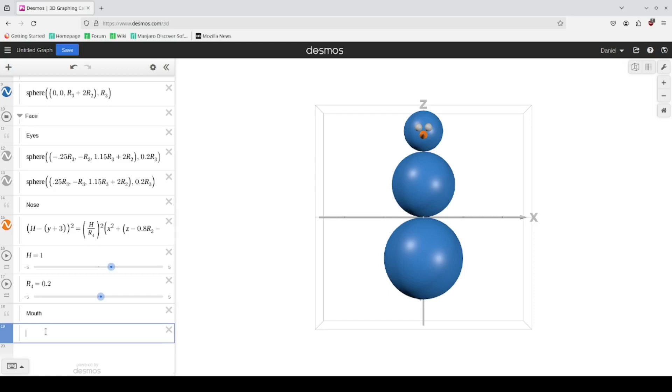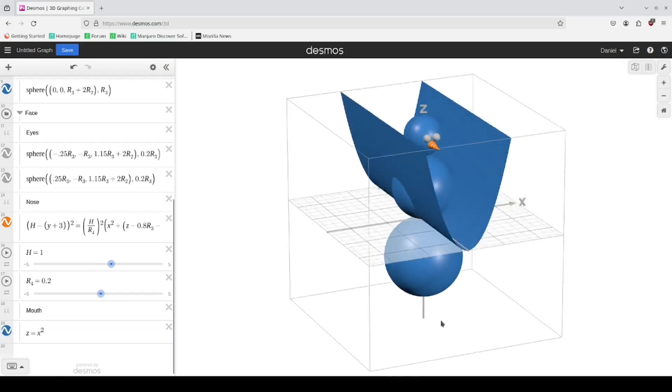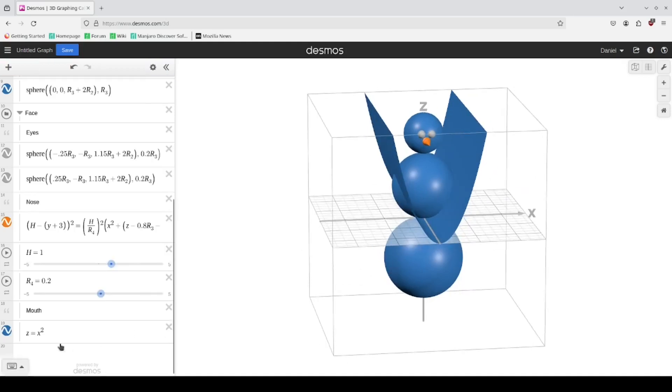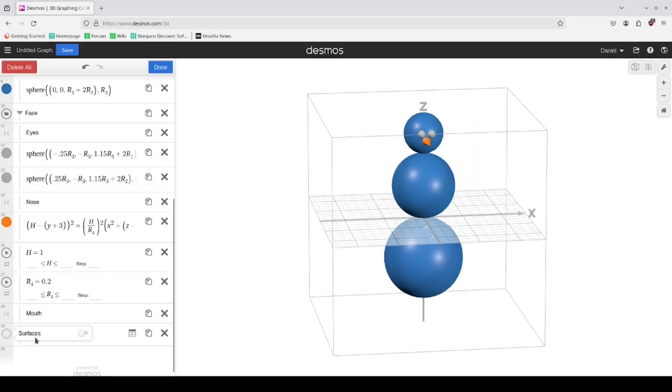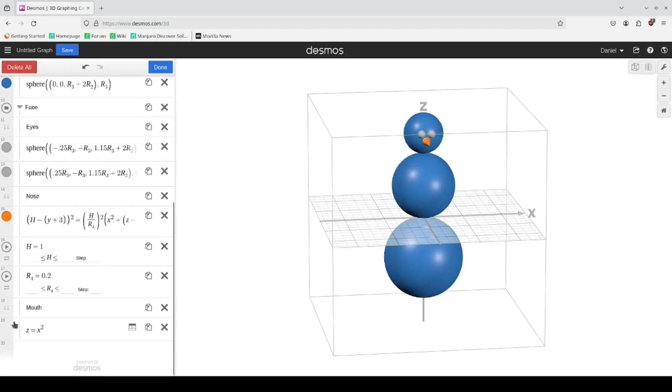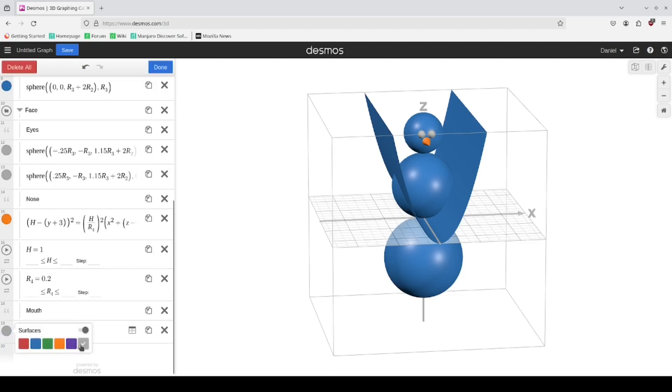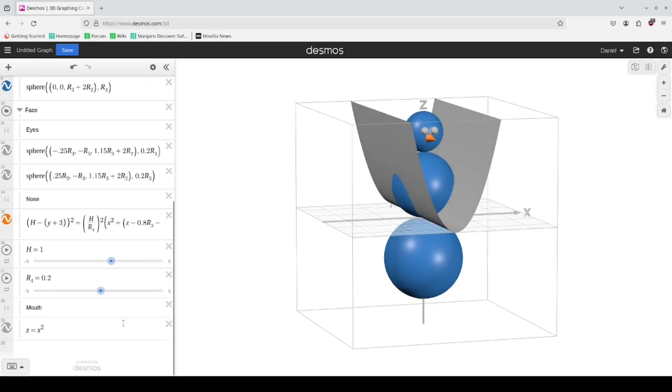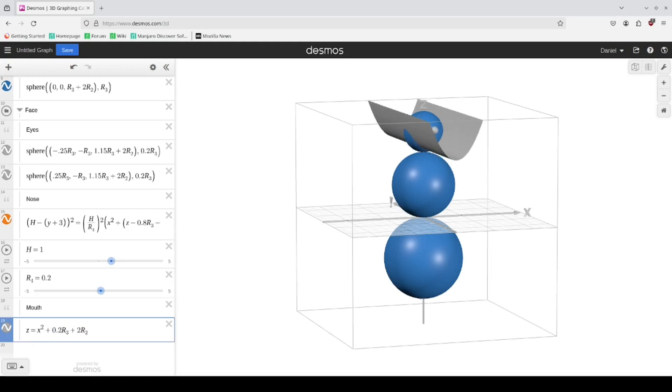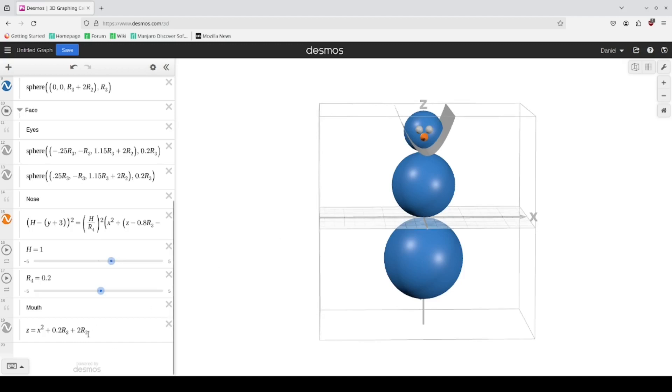It's going to be z equals x squared for starters. I want to change this to be the gray color here, and then move this up by this value here. Of course you bring down the heights by some, and for the y it's got a hard set of values.